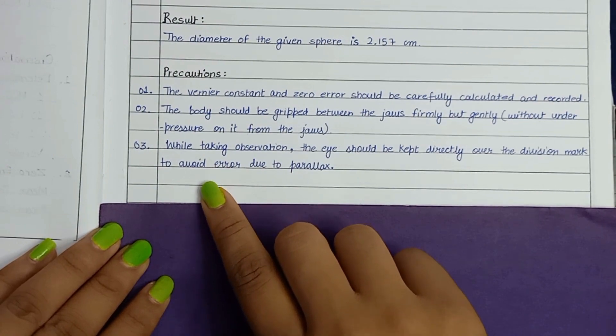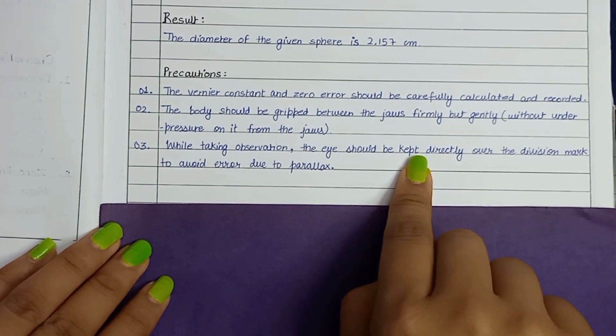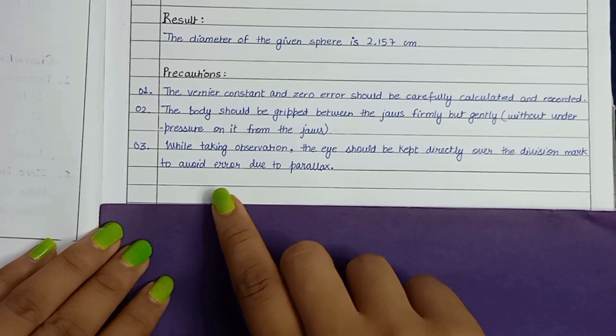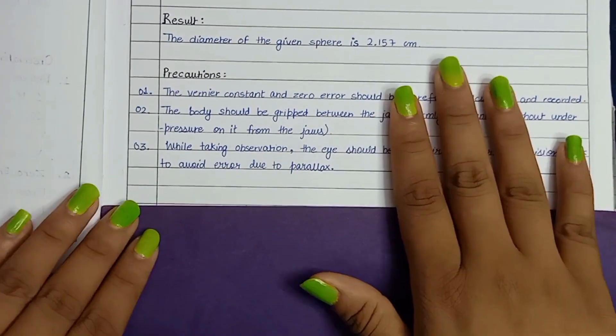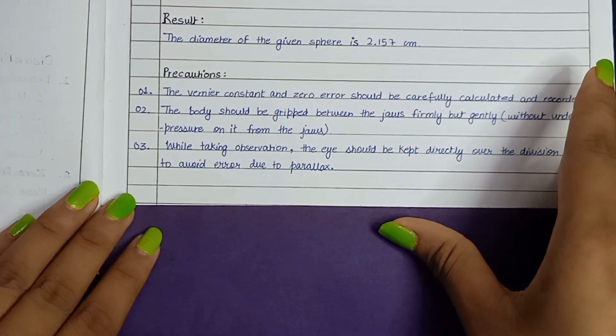Third, take observation. The eye should be kept directly over the division mark to avoid error due to parallax. So these are the precautions of this experiment.